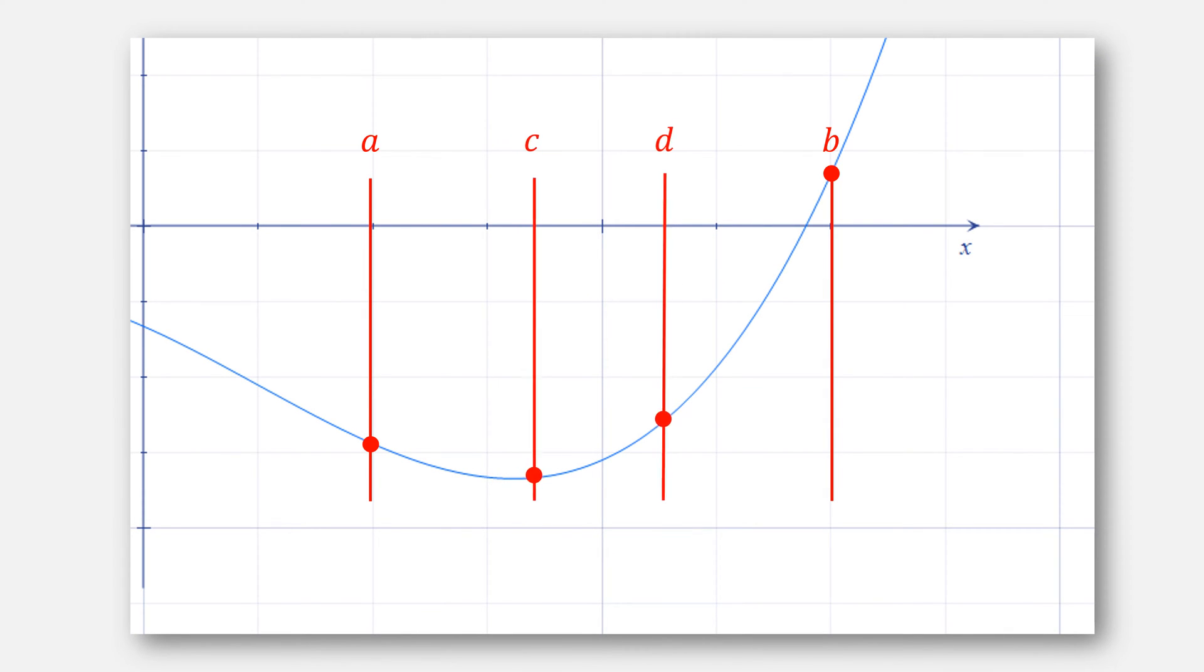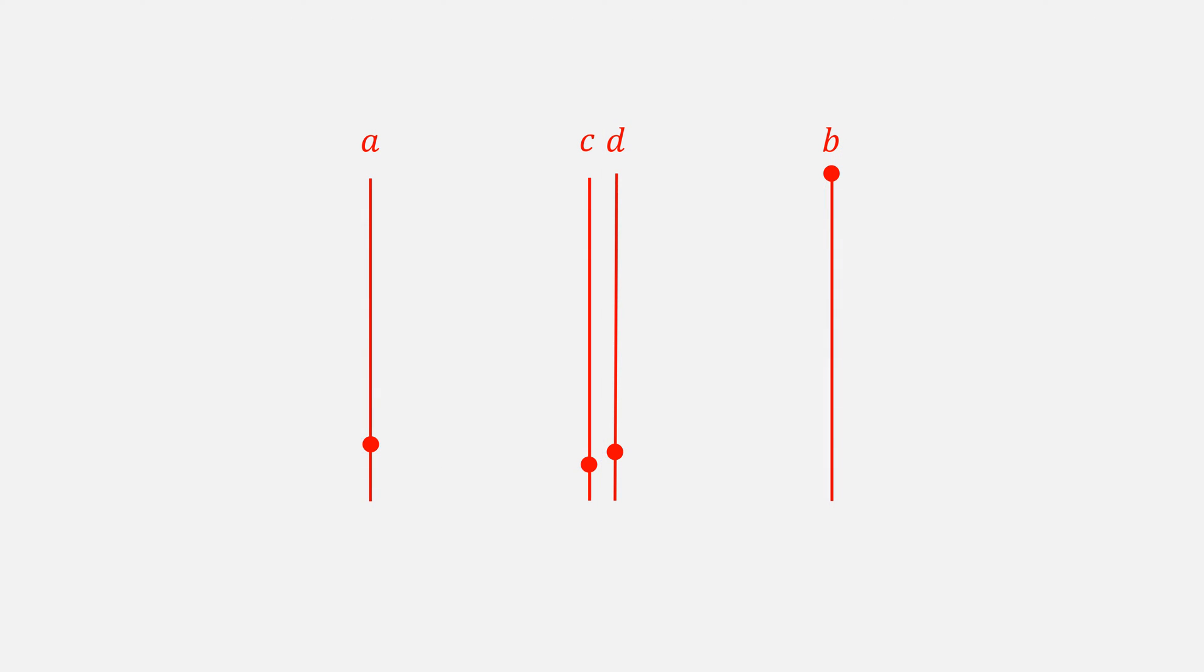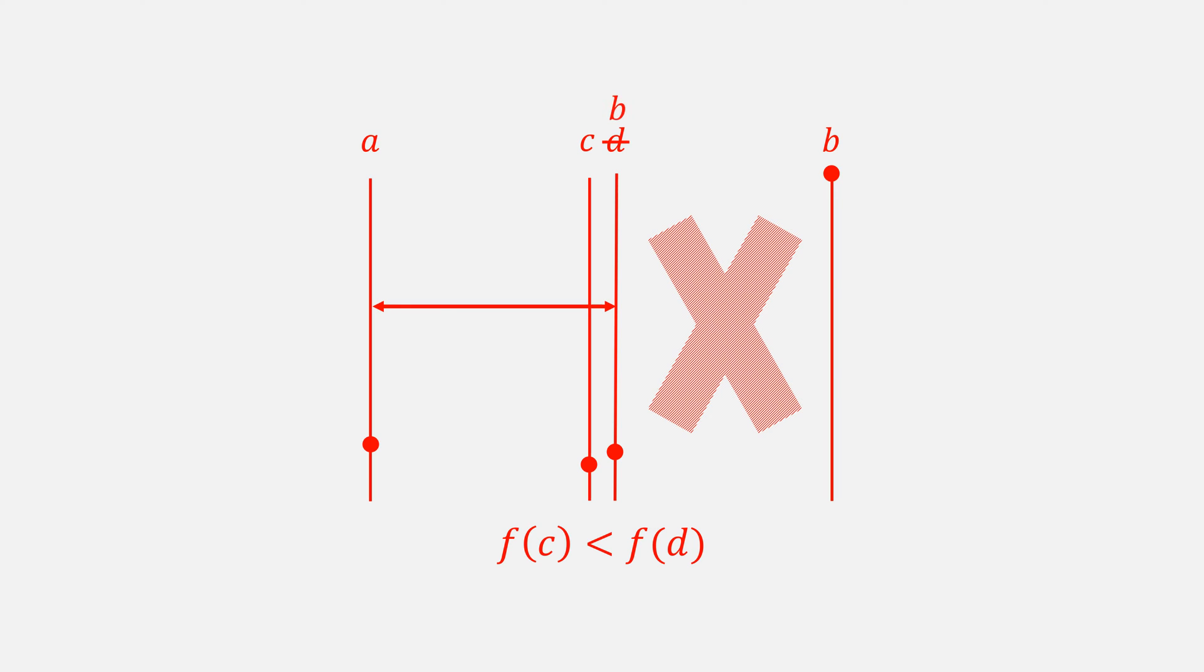If we instead move our C and D values to be within epsilon distance of each other, I'm exaggerating it here, we can actually improve a lot on ternary search. Now when we check if F of C is less than F of D, our new interval is going to be about half the size of our old one. This is the basis of dichotomous search.